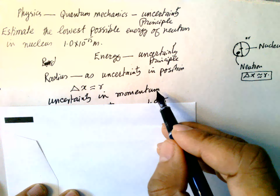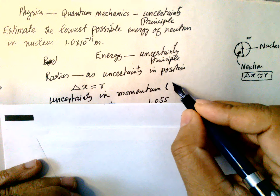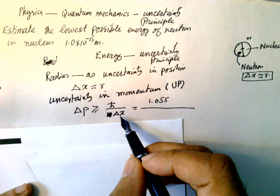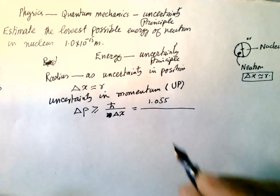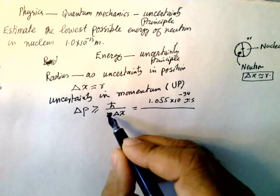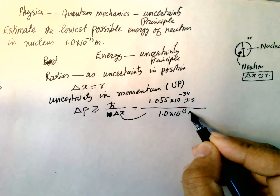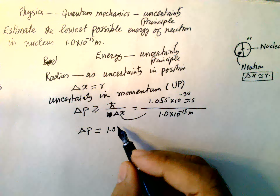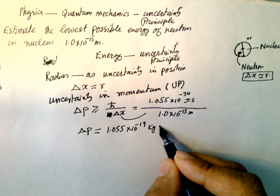The uncertainty in momentum can be found from the uncertainty principle: delta P is equal to h-bar over delta x. So delta P equals 1.055 × 10⁻³⁴ Joule·second divided by the uncertainty in position, which is 1 Fermi = 1 × 10⁻¹⁵ meters. This gives delta P = 1.055 × 10⁻¹⁹ kg·m/s.